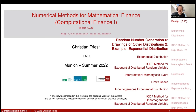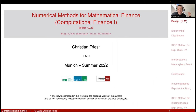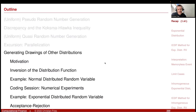Welcome to Numerical Methods for Mathematical Finance. We are still in our section on random number generation. Having discussed how we generate uniform random numbers, we started in the last session to discuss how we can generate sequences of random numbers that have a different distribution. We are now looking at generating drawings of other distributions.